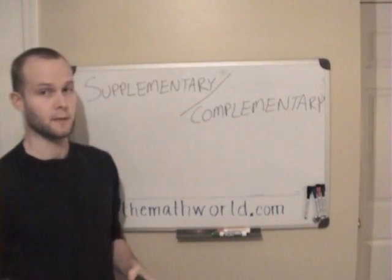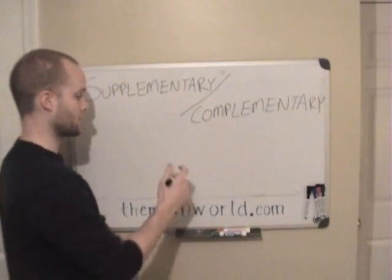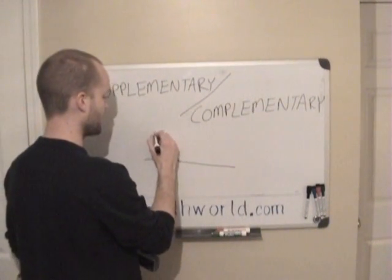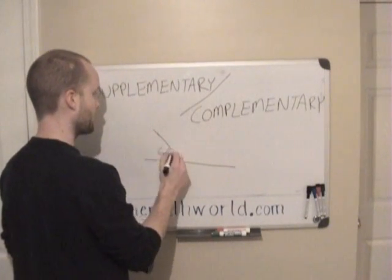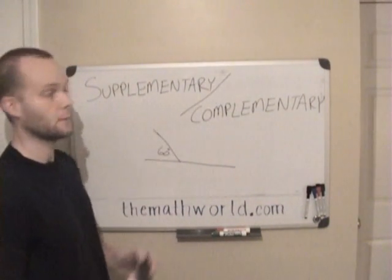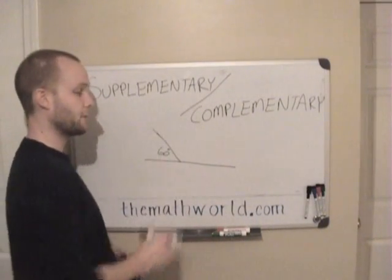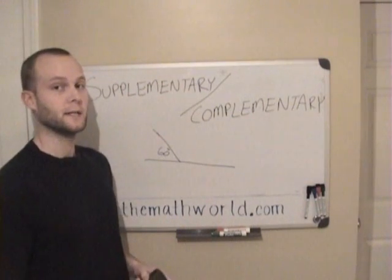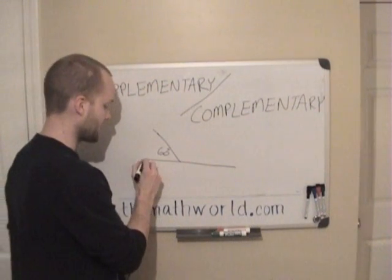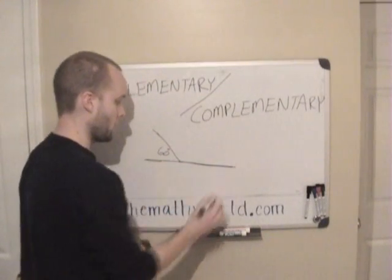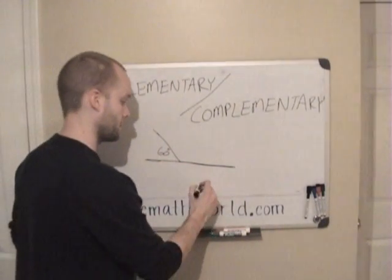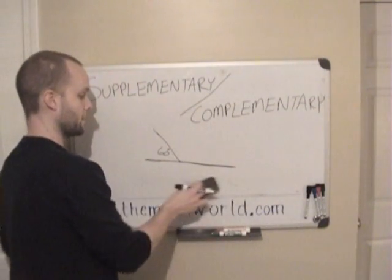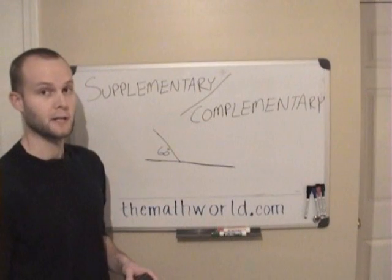The first one we're going to go over is supplementary, and you'll see this a lot in geometry. A lot of times they'll give you a straight line and give you an angle. What supplementary means is if there are two angles that are supplementary, they're going to add up to 180 degrees — meaning the two angles together will equal a straight line. The angle of a straight line is 180 degrees, so they supplement each other into 180 degrees.